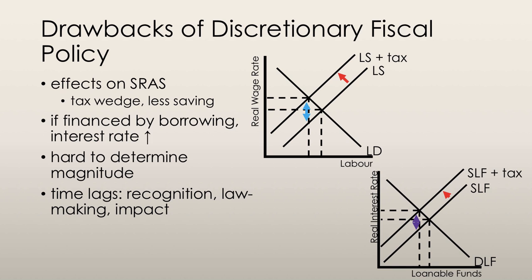There are also three time lags which greatly impact the effectiveness of a government's fiscal policy. Recognition lag is the time it takes to figure out what fiscal policy actions are needed — the current and future states of the economy need to be assessed before it is even possible to determine what exactly needs to be done.